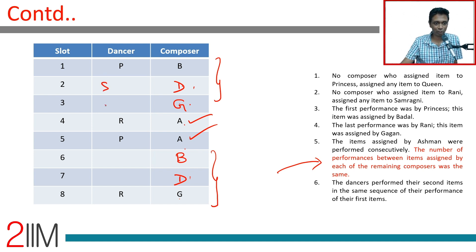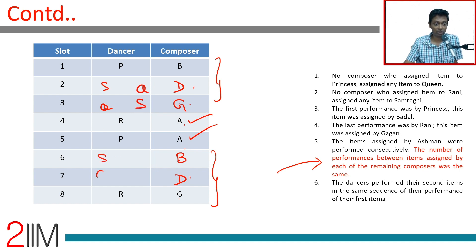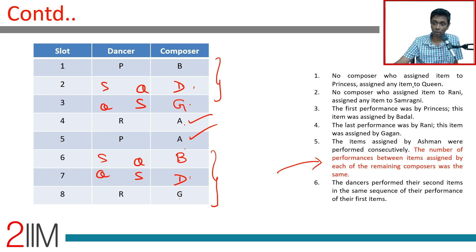Now it's either S and Q in positions 2 and 3, or Q and S. If it were S and Q in round one, round two would also be S and Q. If it were Q and S, round two would also be Q and S. Checking the constraint — no composer assigned to Princess also assigned to Queen — this arrangement is not possible, so we get the other one.